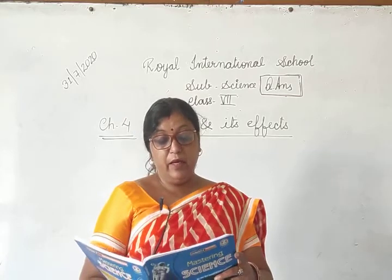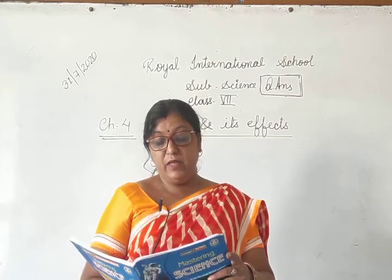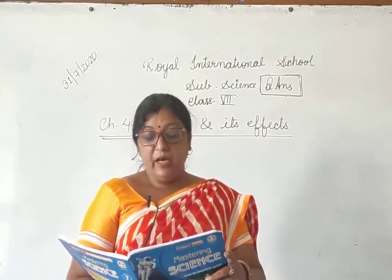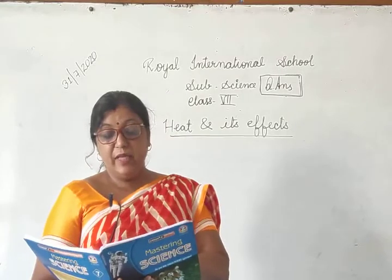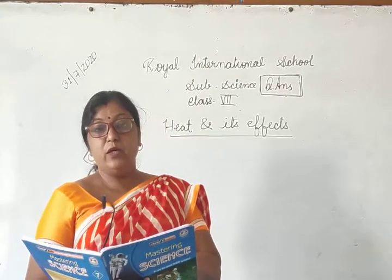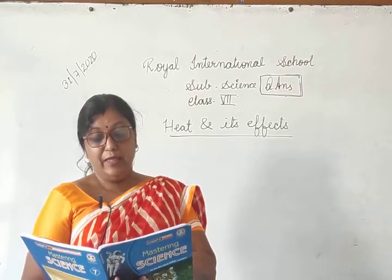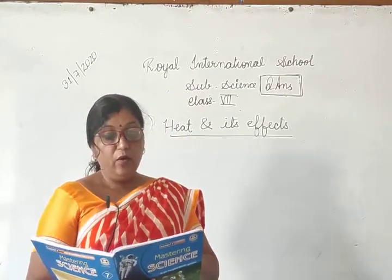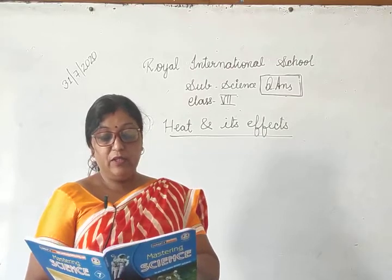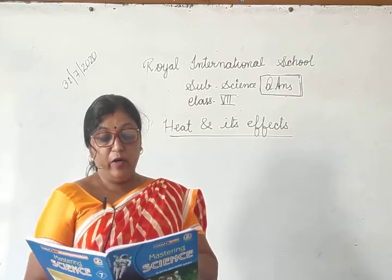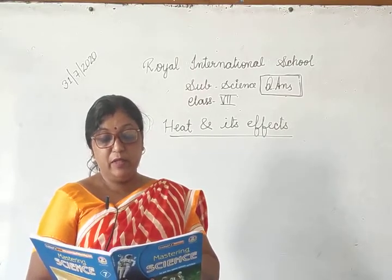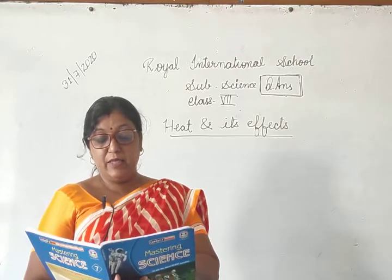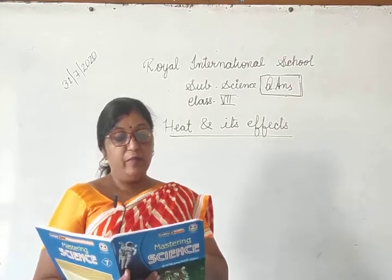Fourth: the range of temperature in a clinical thermometer is 35 degree Celsius to 42 degree Celsius. Mark C. The normal body temperature of a human body — kitna hota hai? 37 degree Celsius. Mark D.